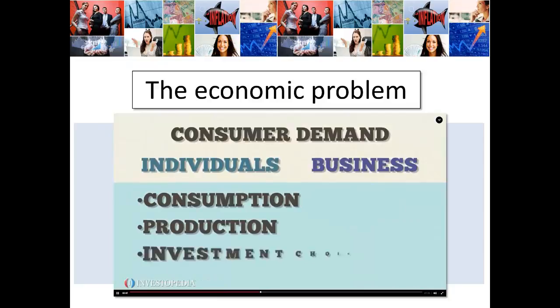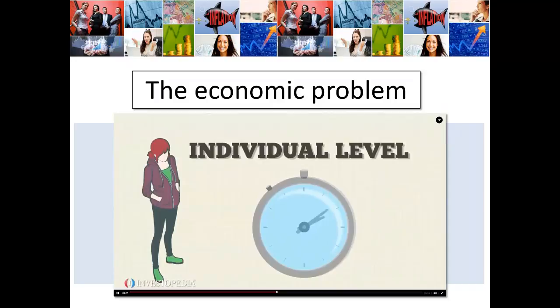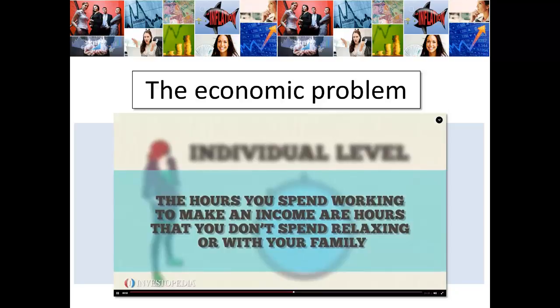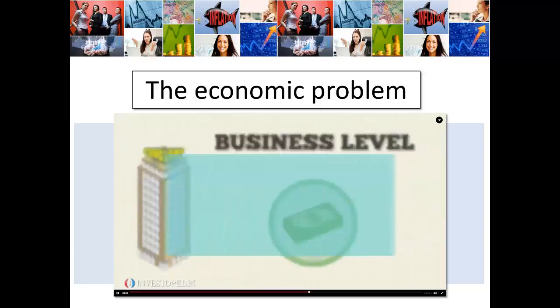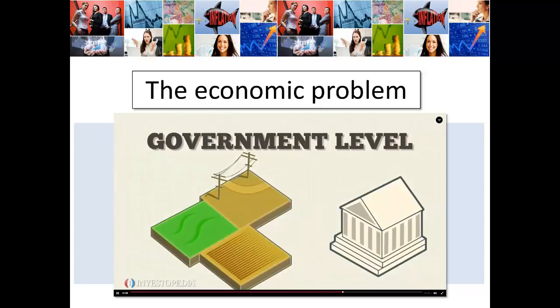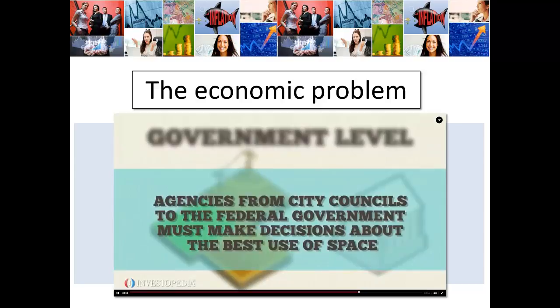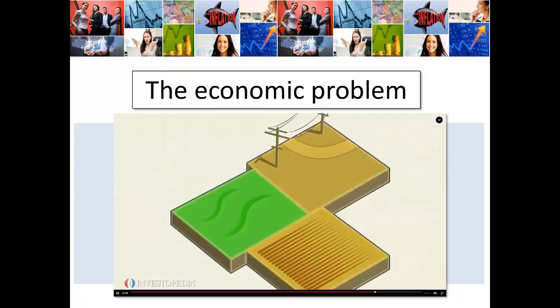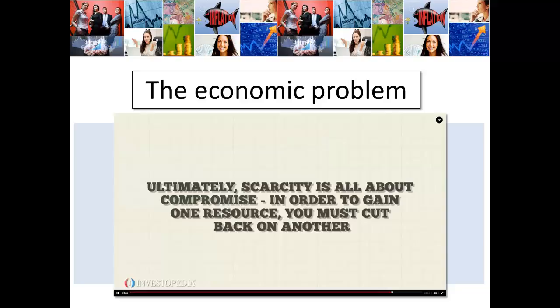At the individual level, time is an example of a scarce resource — the hours you spend working to make an income are hours you don't spend relaxing or with your family. At the business level, money is an example of a scarce resource — the dollars spent on rent, wages, and raw materials are dollars that don't go towards profits. On the government level, land is a scarce resource — with only so many square miles of usable land, agencies from city councils to the federal government must decide the best use of space. Land turned into a park is land that cannot be used for roads or houses. Scarcity is all about compromise — in order to gain one resource, you must cut back on another.